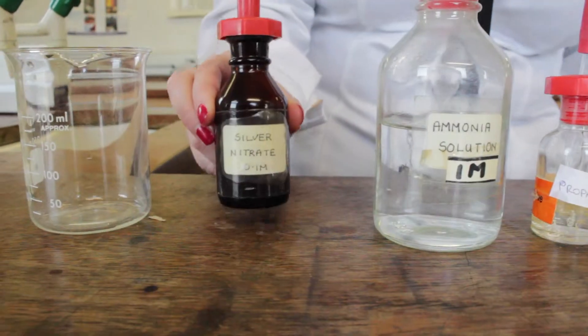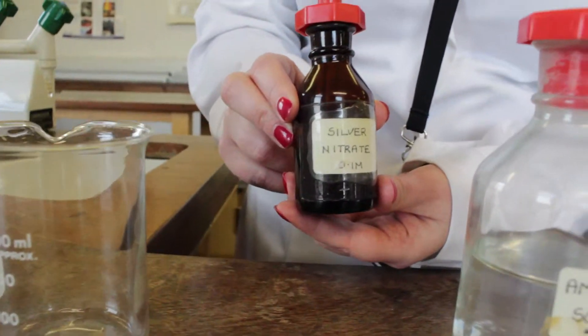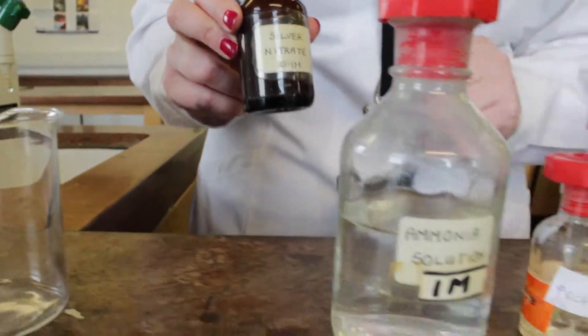We start by adding about two centimeter cubed of silver nitrate solution to our test tube.